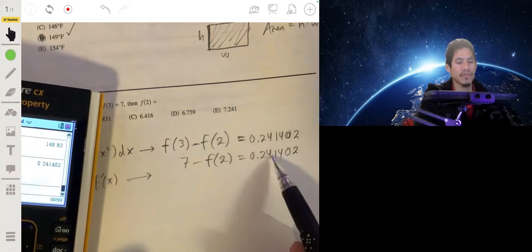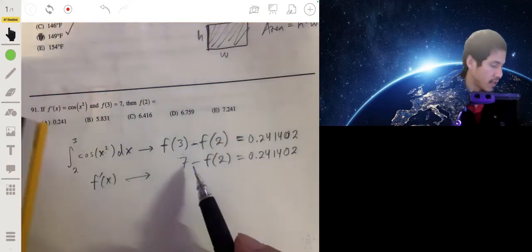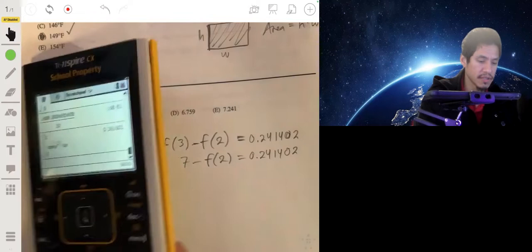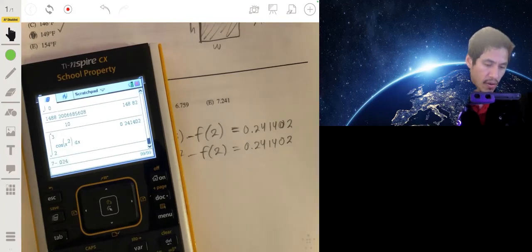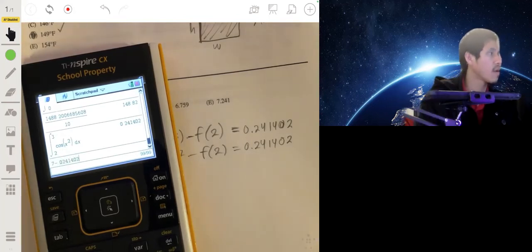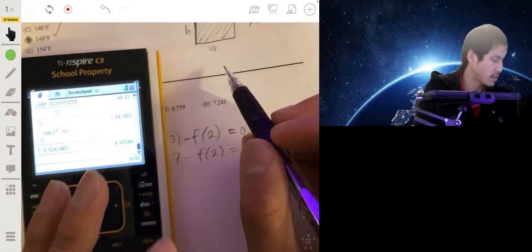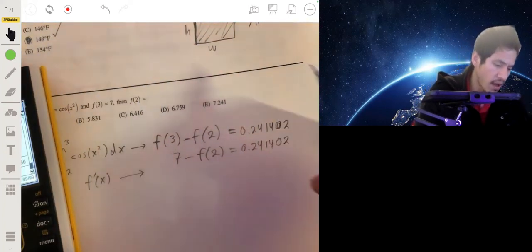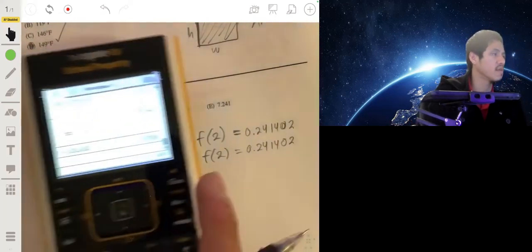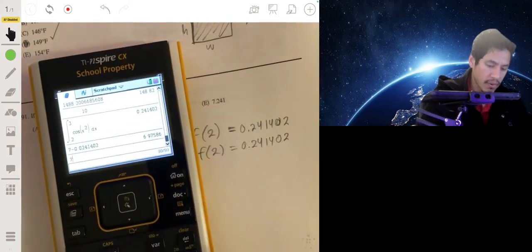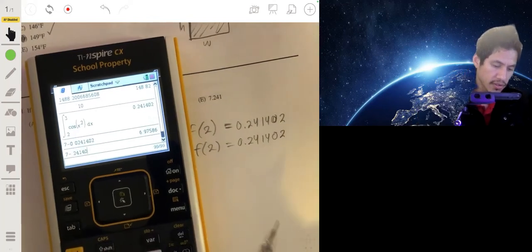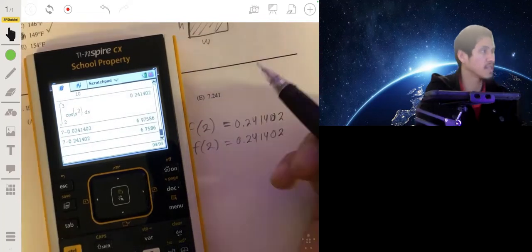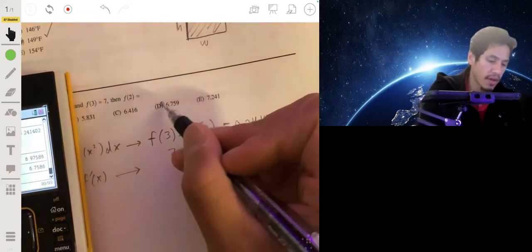Or you just add f(2) and subtract this, and that's probably going to be easier. So I'm going to do 7 minus 0.24142. That gives us 6.7586. That would be D.